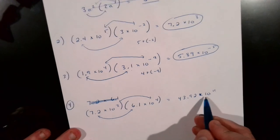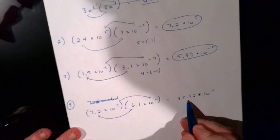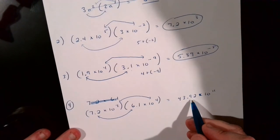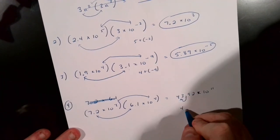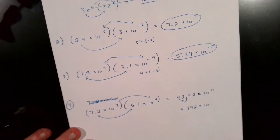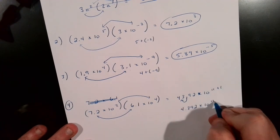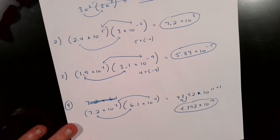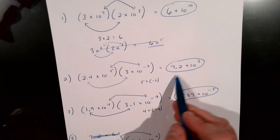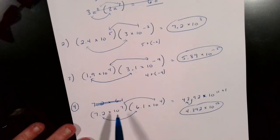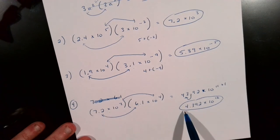But here's the problem. This number 43.92 is not in scientific notation — it's too big. Look at where the decimal is: it's at 43.92, which is in the wrong spot. We need to move the decimal back between the 4 and the 3, giving us 4.392 times 10. And since we moved it one place, we add one more to the exponent — so it becomes 4.392 times 10 to the 12th power. That's the catch: if you multiply and get a number bigger than 10, you must move that decimal over one time.